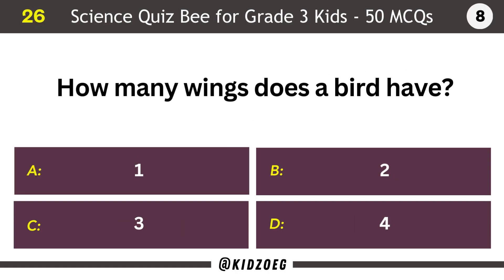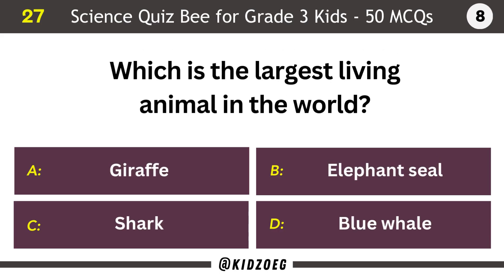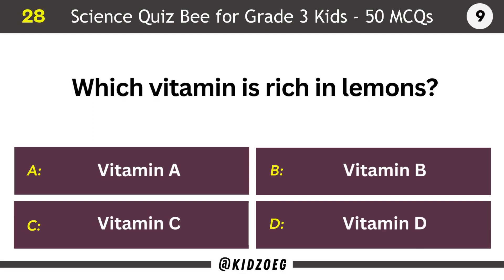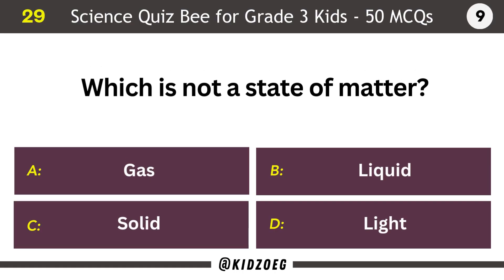How many wings does a bird have? Two. Which is the largest living animal in the world? Blue Whale. Which vitamin is rich in lemons? Vitamin C. Which is not a state of matter? Light.